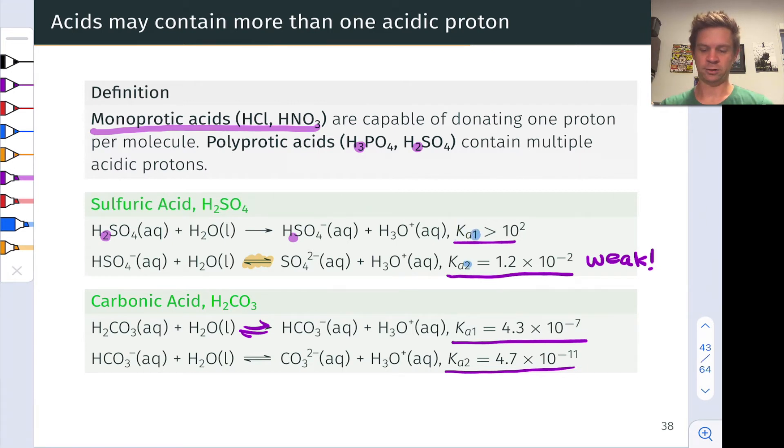Loss of that second proton is called Ka2. Loss of the third proton is called Ka3, et cetera, for polyprotic acids.